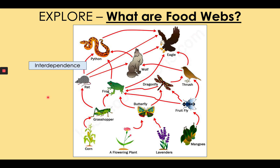The most important idea I want to introduce you to with this food web is something called interdependence. It means this: the population of one organism in a food web affects the population of others. If the population of butterflies, fruit flies and grasshoppers increases significantly, then the population of producers will decrease because there are more consumers eating them — so an increase in primary consumers leads to a decrease in producers. Similarly, if the frog population increased significantly, the primary consumer population would decrease. And if there were more eagles, there would be fewer pythons, fewer wolves and fewer thrushes, as well as fewer frogs and fewer rats.